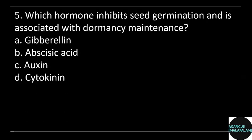Fifth question: Which hormone inhibits seed germination and is associated with dormancy maintenance? Answer options — Option A: Gibberellin, Option B: Abscisic Acid, Option C: Auxin, Option D: Cytokinin.